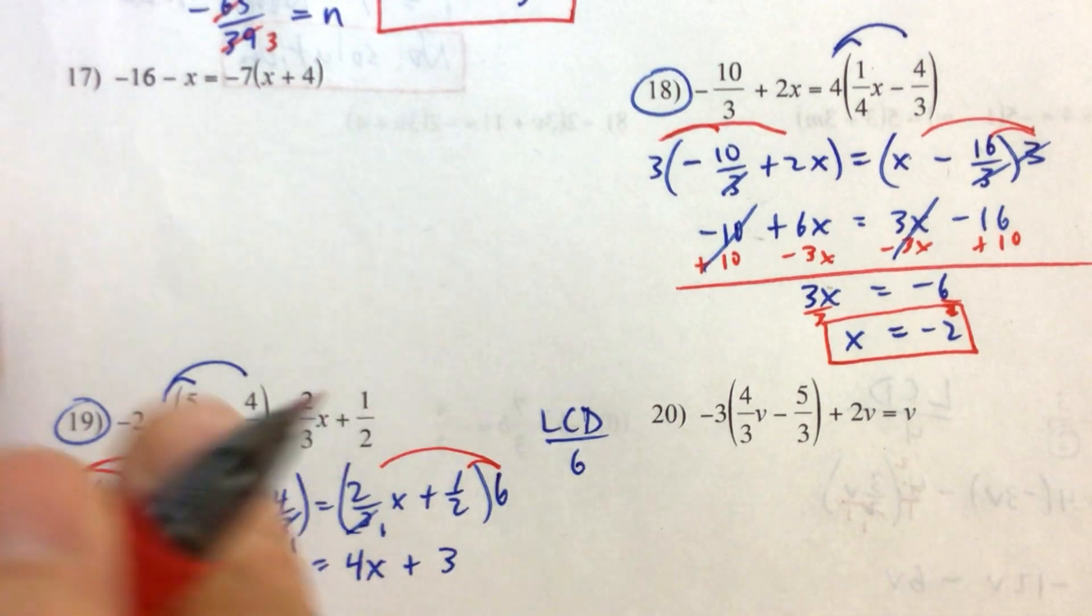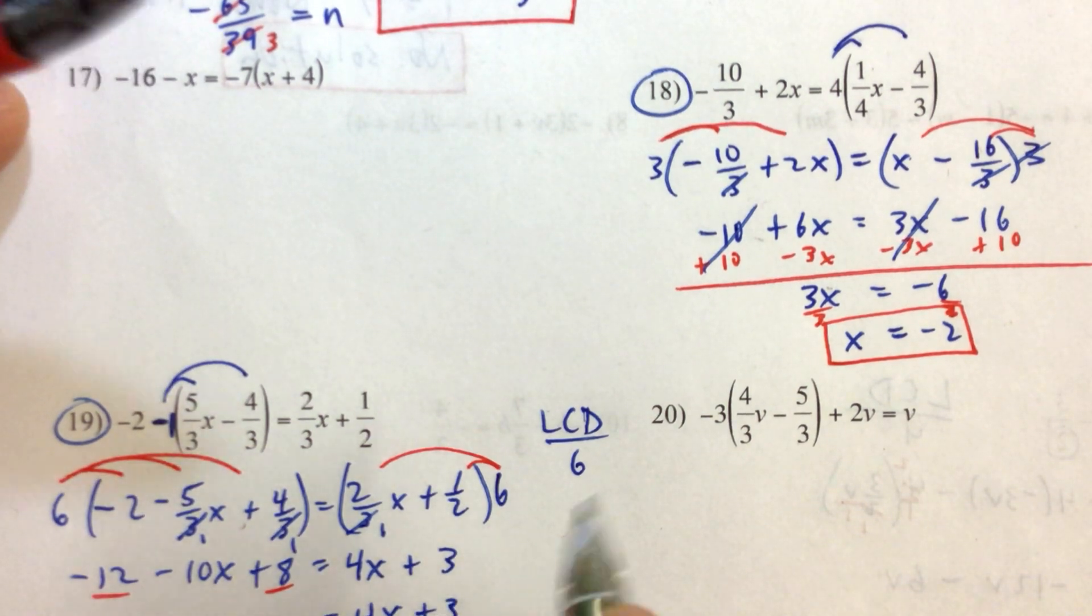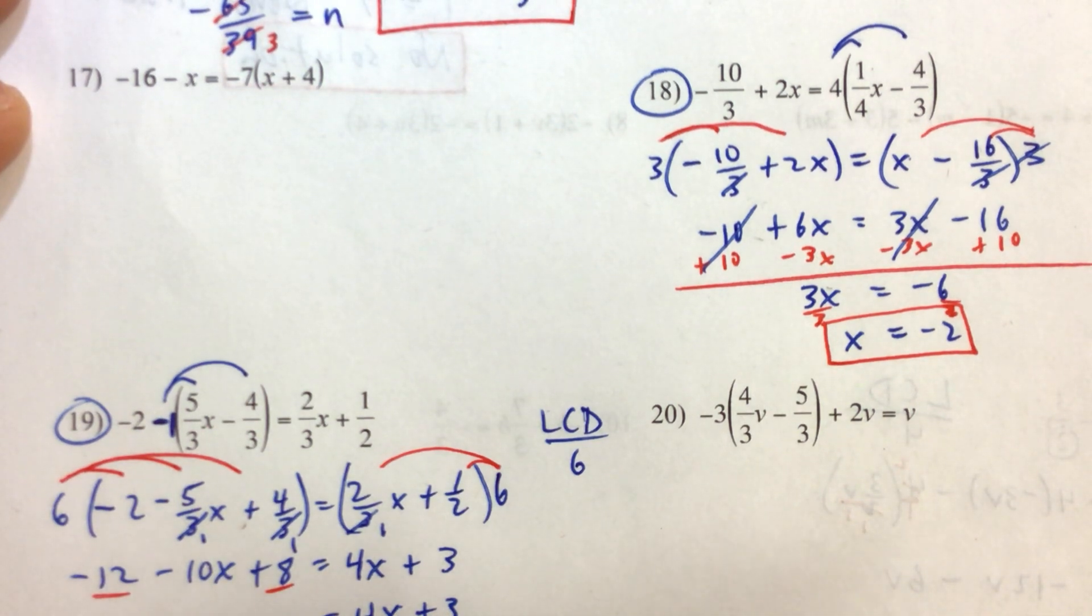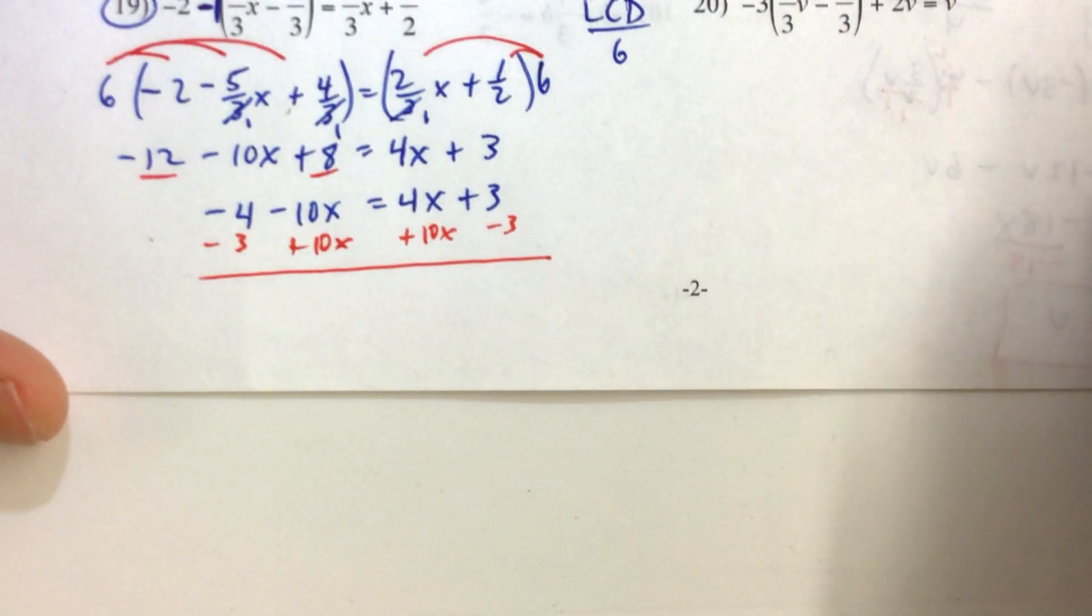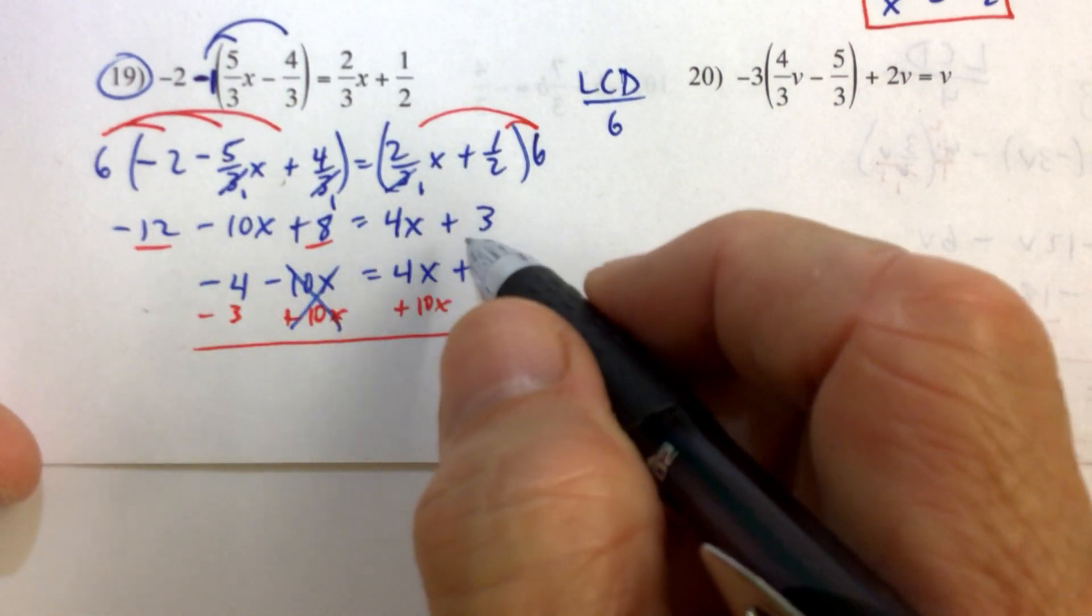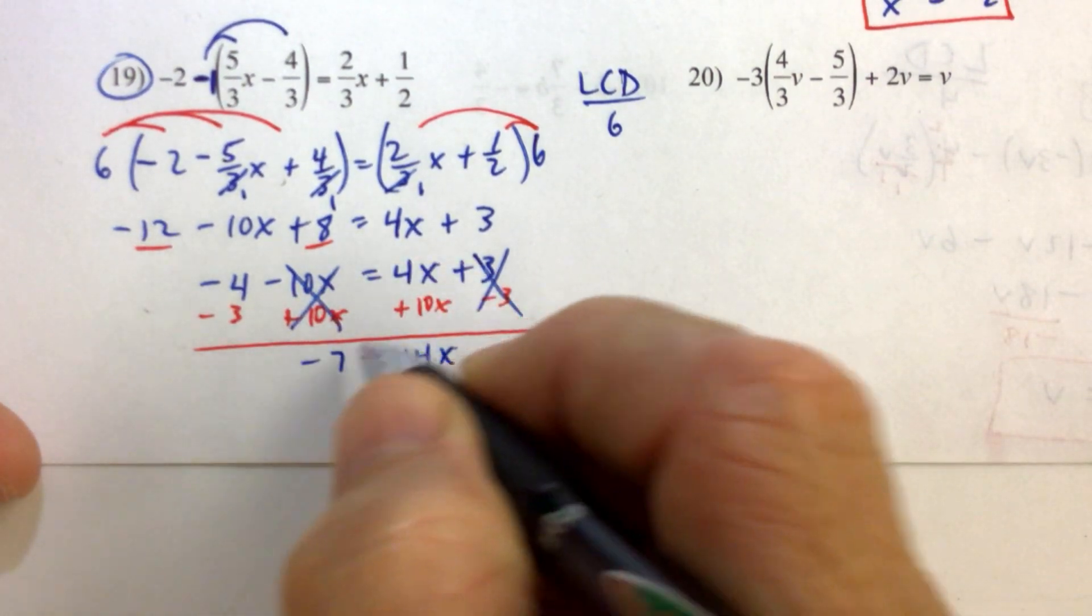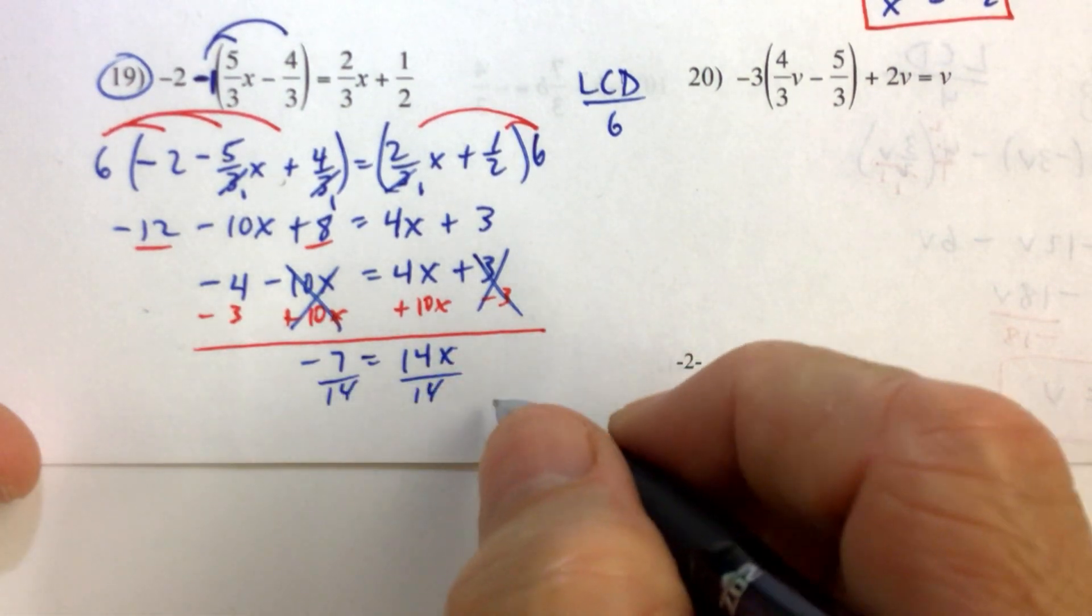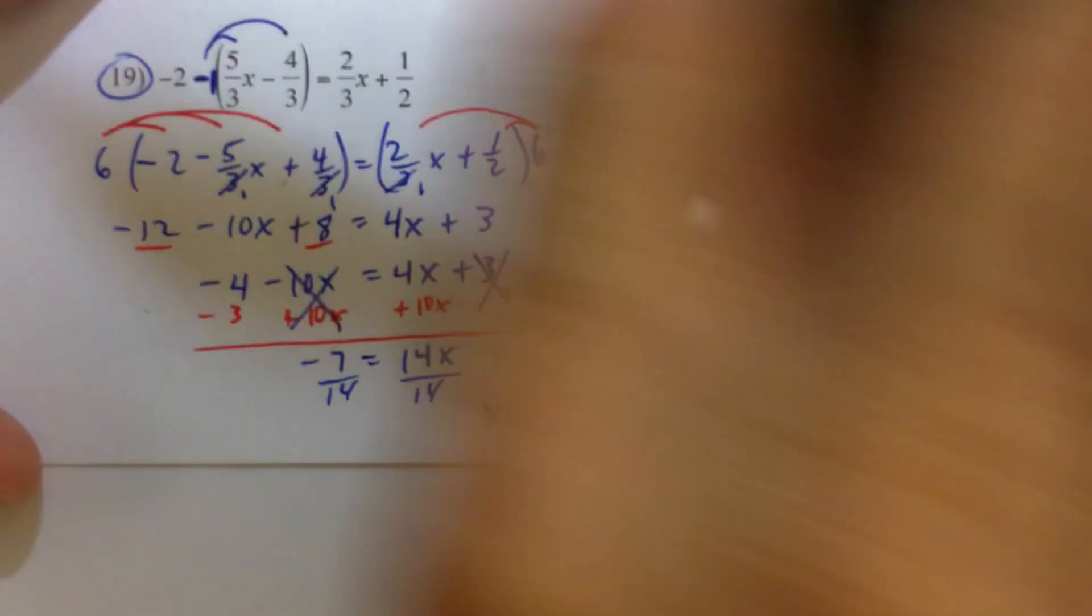And simplifying a little bit further, we're going to combine like terms on the left. Negative 12 and 8 is negative 4. So we have negative 4 minus 10x equals 4x plus 3. Let's move the variable terms to the right by adding 10x to both sides. At the same time, we will move the number terms to the left. Give ourselves a little space. And when the dust settles, 10x minus 10x there and 3 minus 3 there. On the right-hand side, we have 14x. On the left-hand side, we have negative 7. By dividing both sides by positive 14, we get x equals negative 1/2.